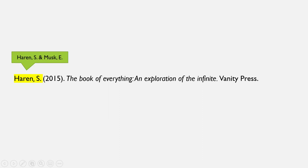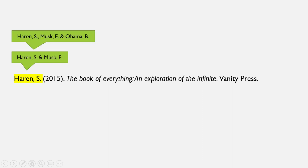But what happens when there's more than one author? Now it gets a little more complicated. The first author is formatted last name, comma, first initial, comma, then you use the ampersand or and symbol, followed by the second author whose name is formatted just like the first — for example: Heron, S., & Musk, E. If there are three authors, you format the names the same but place a comma between authors one and two, and the ampersand goes before the last author — for example: Heron, S., Musk, E., & Obama, B. You use this format for up to 20 authors if they are all credited on the same article. Always end with a period.